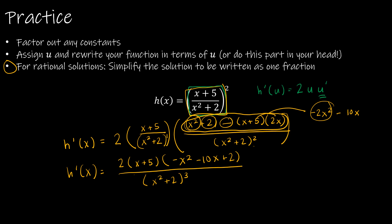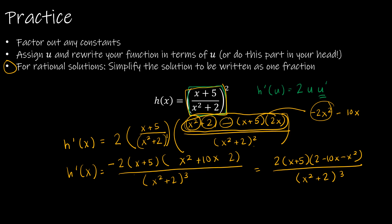So h prime of x equals 2(x plus 5) times (negative x squared minus 10x plus 2), all over (x squared plus 2) cubed. You may also see this written as 2 minus 10x minus x squared in the numerator — neither form is more correct than the other. You could even factor out the negative to get a positive x squared, positive 10x, and negative 2.